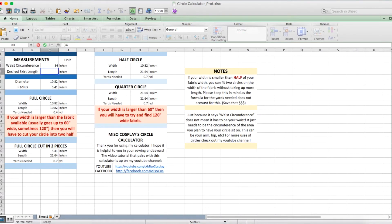To start, let's use the calculator and input the two required measurements, the waist circumference, or wherever you want your skirt to start, and the length of your skirt. Then you have to decide which circle you want to make. For this tutorial, I'm going to make a full circle.